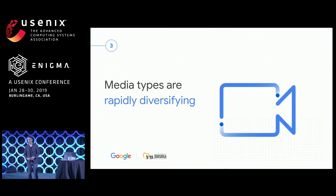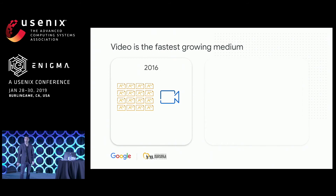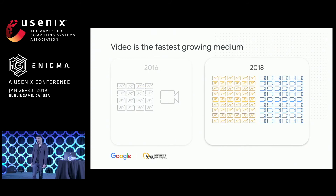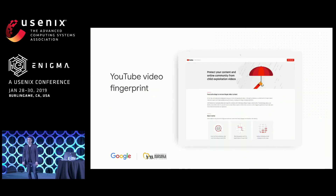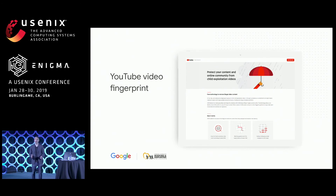Our third challenge is that the media reported to NCMEC has been rapidly diversifying. Back in 2016, about one in 16 reports were videos. Fast forward to 2018, we are now close to parity between images and video. As a result, we need to develop ways to have reliable detection across all media to keep up with the diversification of content — and this is not only images and video, but also documents and chat messages. One effort in that direction is the release of a YouTube fingerprinting technology which helps build a list of known abusive videos.